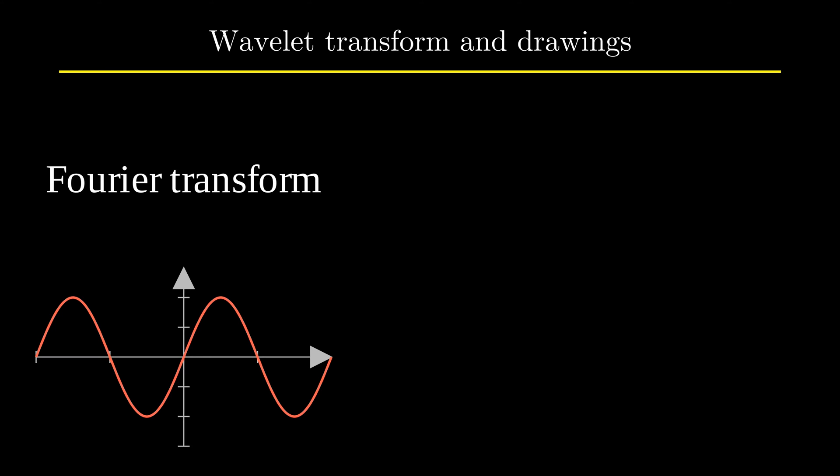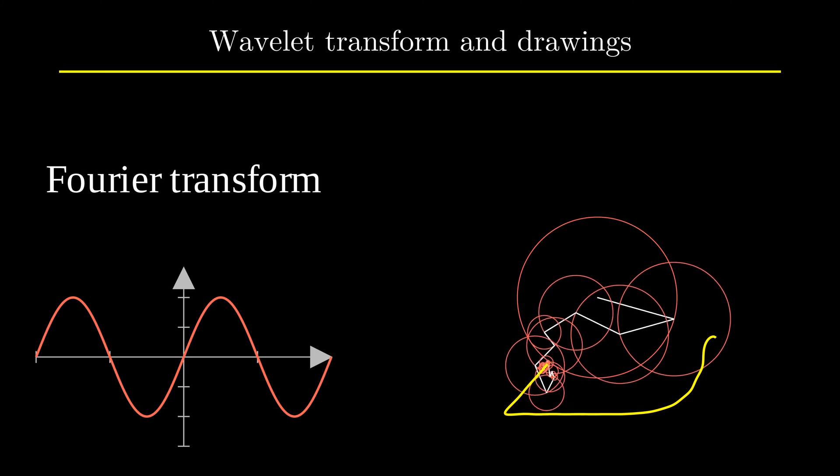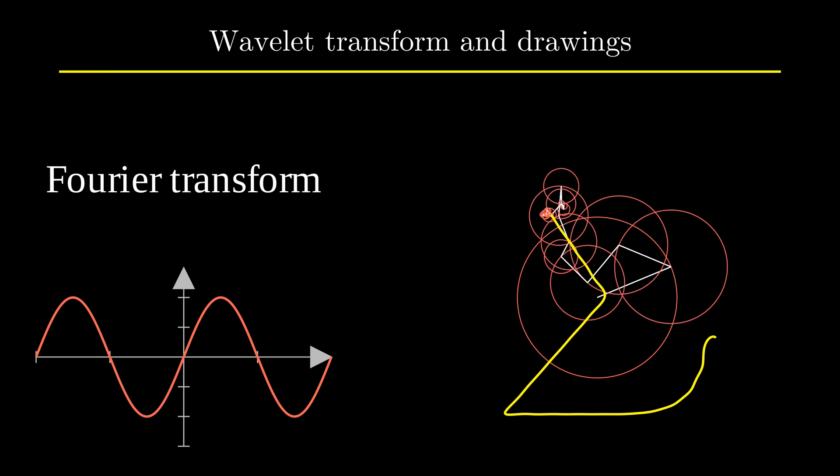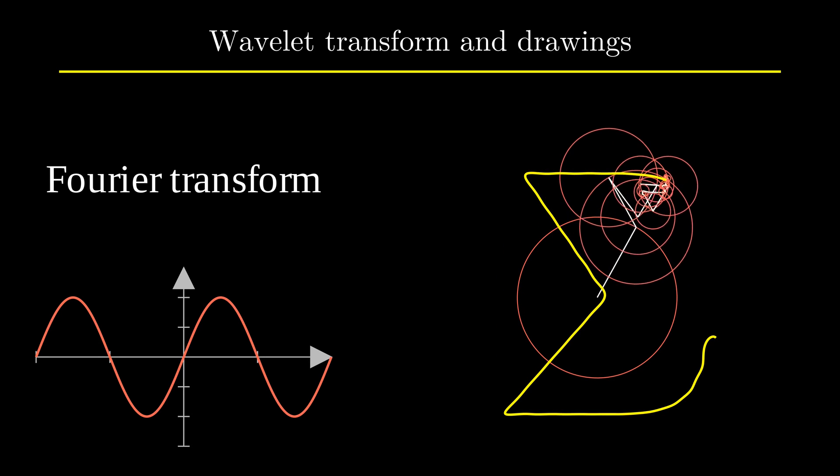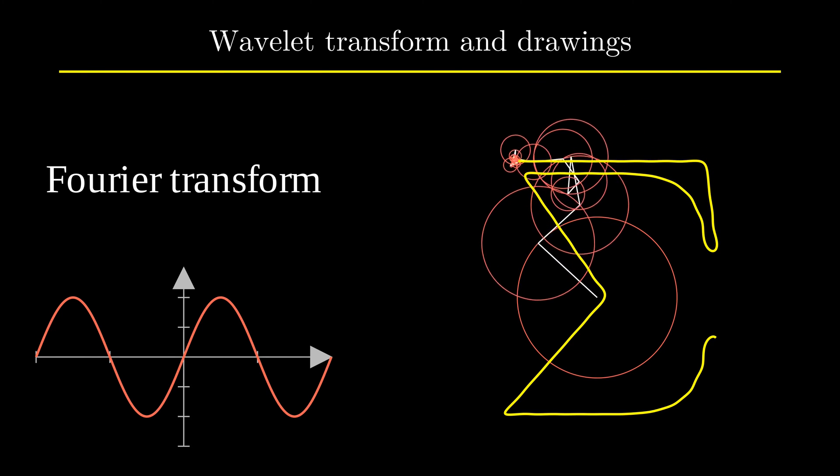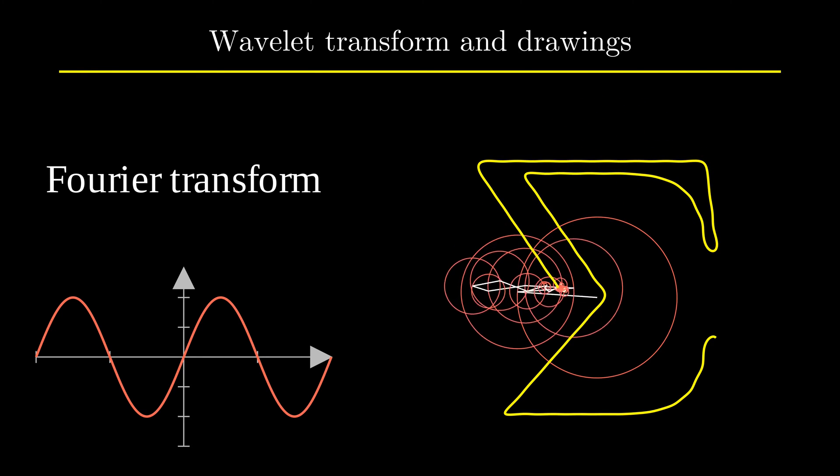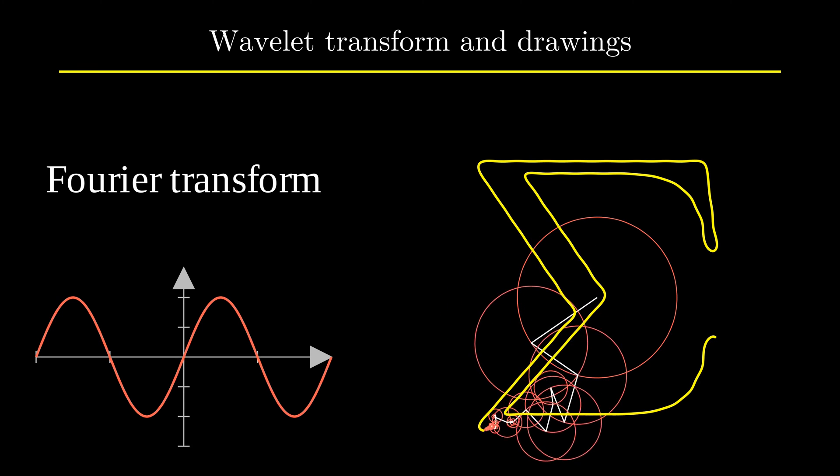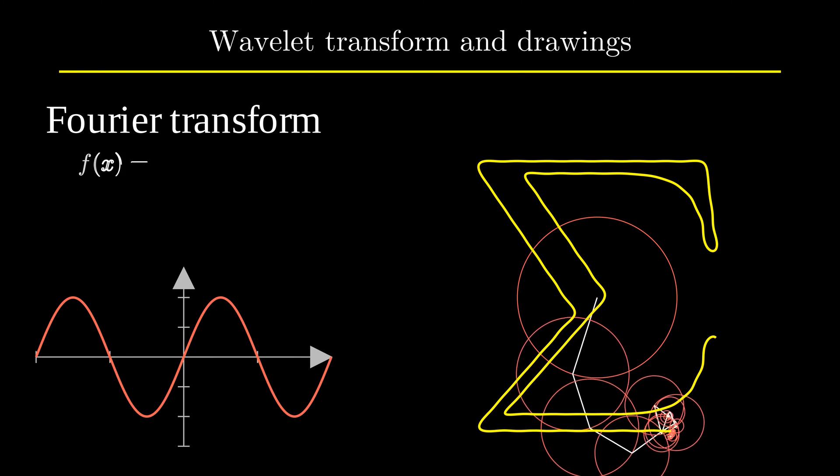If you are interested in 3Blue1Brown videos, you might have come across these drawings so satisfying to watch that use vectors rotating at a constant speed. I am not going to go into details about them, I'll leave you a link to the video in the description. To summarize, these drawings are based on the Fourier Transform.